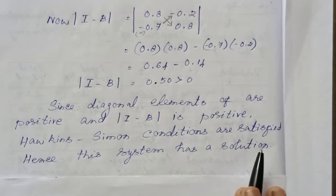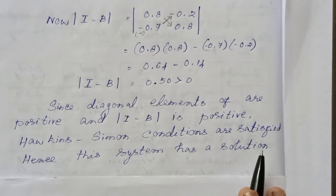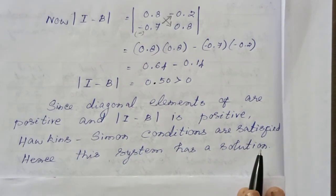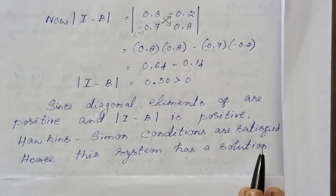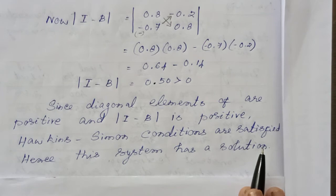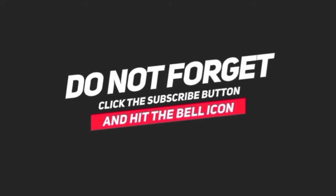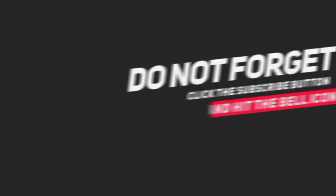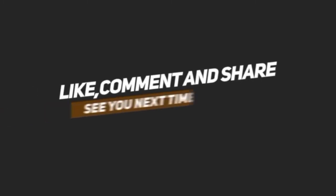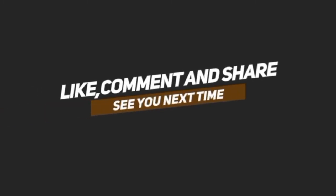So this system can be solved. If both conditions — positive diagonal elements and positive determinant — are met, the system is accepted. The Hawkins-Simon conditions are satisfied. Thank you.